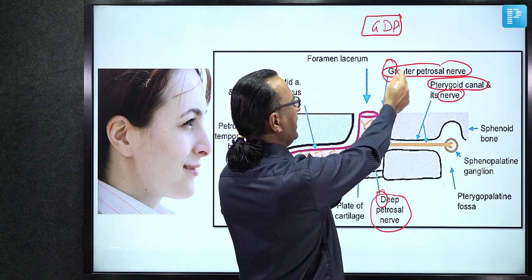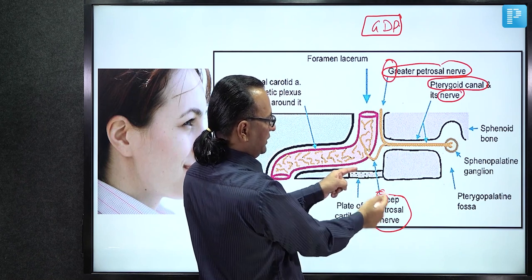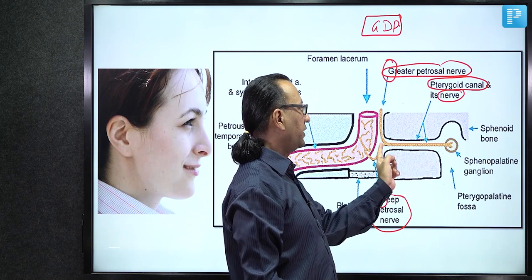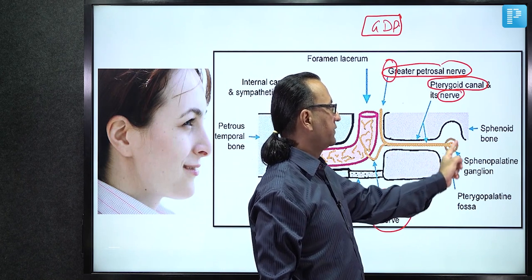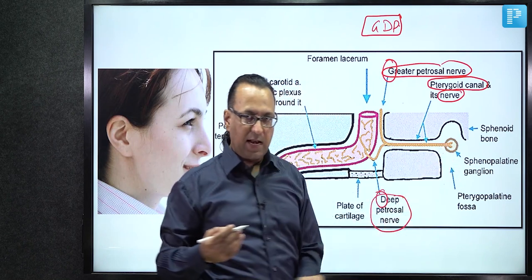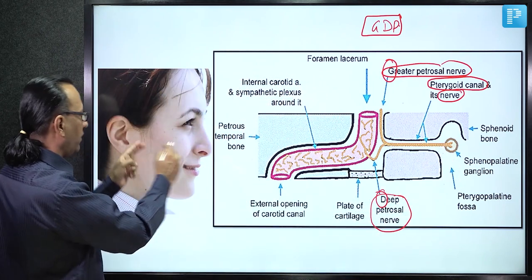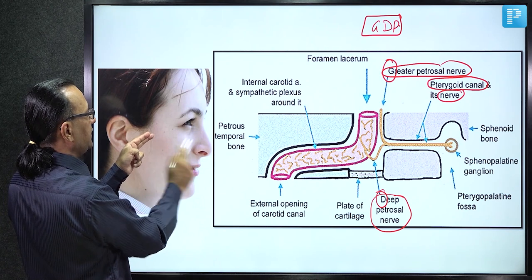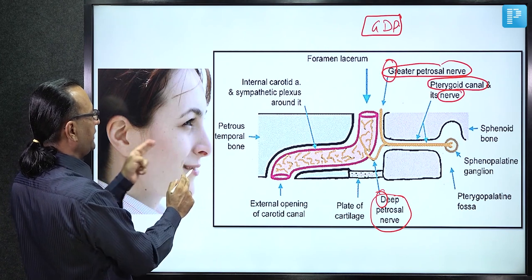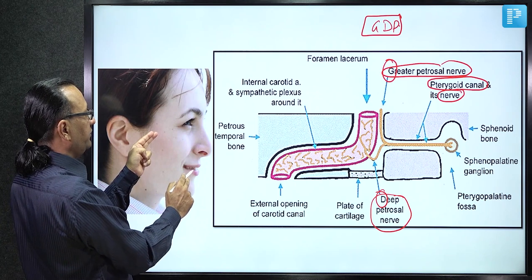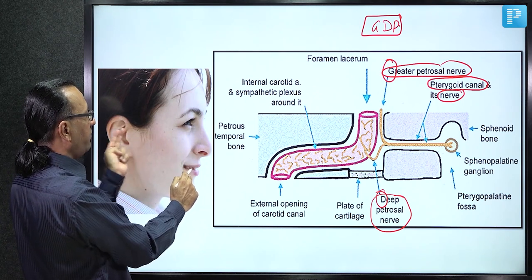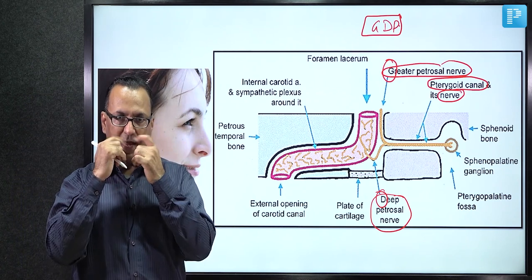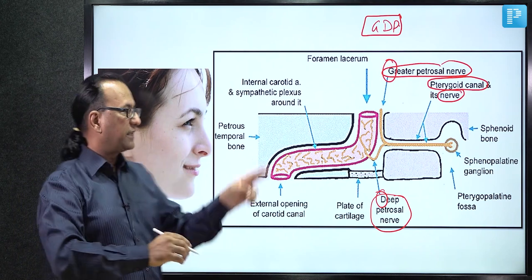The greater petrosal nerve carries parasympathetic fibers and the deep petrosal nerve carries sympathetic fibers; together they form the vidian nerve with both fiber types. The vidian nerve reaches the pterygopalatine (sphenopalatine) ganglion, which controls secretion of the lacrimal gland, nasal glands, and palatine glands. In cases of intractable vasomotor rhinitis, vidian neurectomy can provide symptom relief by cutting both sympathetic and parasympathetic fibers.